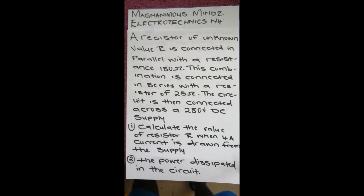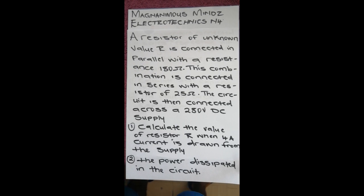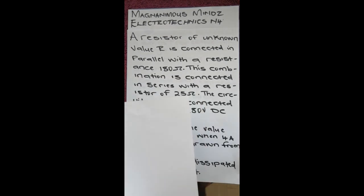Greetings guys, this is Magnanimous Minds Lectures Online. We continue with electronics, and under the topic resistivity, we were given a question: a resistor of unknown value R is connected in parallel with a resistance of 180 ohms. This combination is connected in series with a resistor of 25 ohms. The circuit is then connected across a 240V DC supply. The first question is to calculate the value of resistor R when 4 amps of current is drawn from the supply, and the second is to calculate the power dissipated. To do the first question we need to draw the circuit.